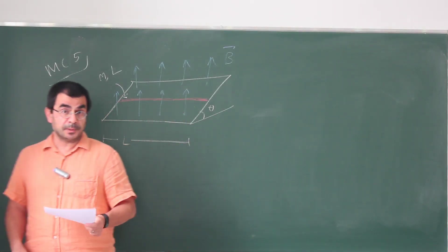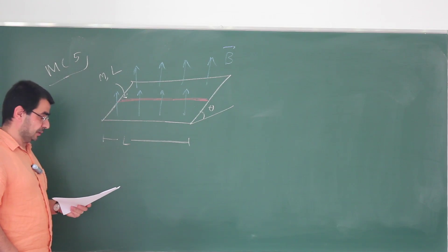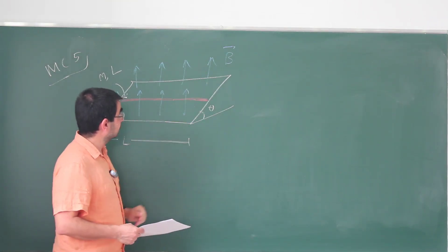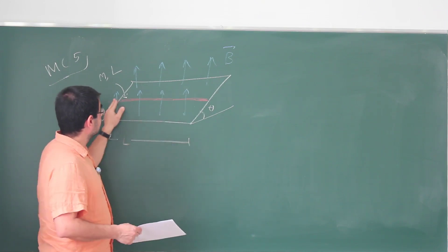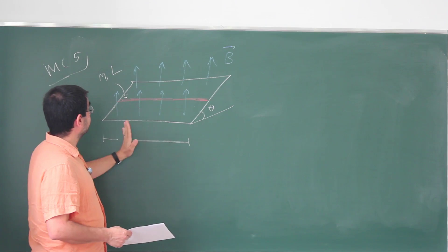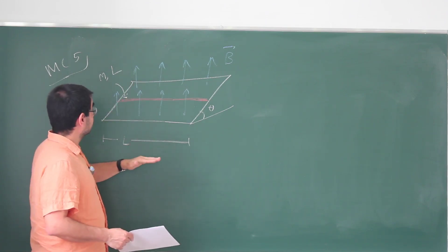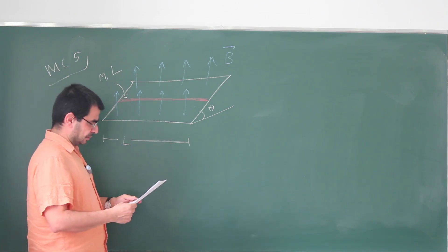This is multiple choice problem 5 from the final exam of physics 106 from 2023-2024 academic year. Here we have an inclined plane that makes an angle theta with the horizontal and we have a wire on this. There is a current in this wire and there is a magnetic field that's perpendicular to the surface of the earth. There's a uniform magnetic field this way and the wire is motionless.